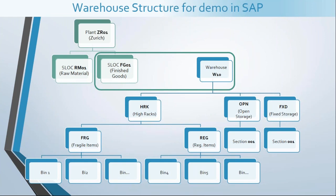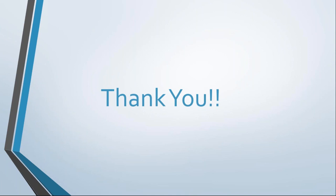With the theory complete, let's create our sample warehouse structure in SAP. We have plant Zurich with two storage locations: RM01 for raw materials and FG01 for finished goods. FG01 will be warehouse managed as a new warehouse. This warehouse will have three storage types: HRK (high rack), OPN (open storage), and FXD (fixed storage). The high rack storage type has two sections: FRG (fragile) and REG (regular). The other two storage types will have one mandatory total section each. Finally, we create bins under the sections.